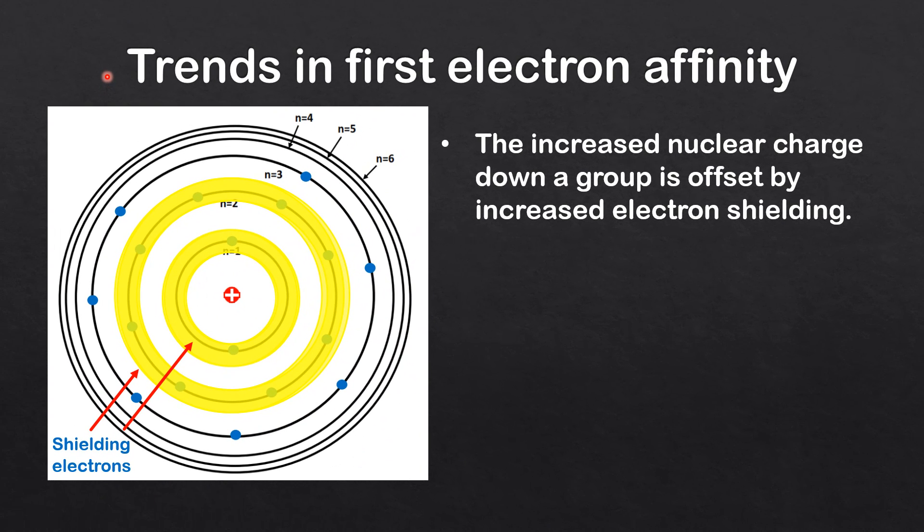Finally, we'll look at the reason for the trends in first electron affinity. The increased nuclear charge down a group is offset by increased electron shielding. Electron shielding occurs when the inner electrons, for example the electrons in n=1 and n=2, shield the outer electrons in n=3 from the positive attraction of the nucleus.